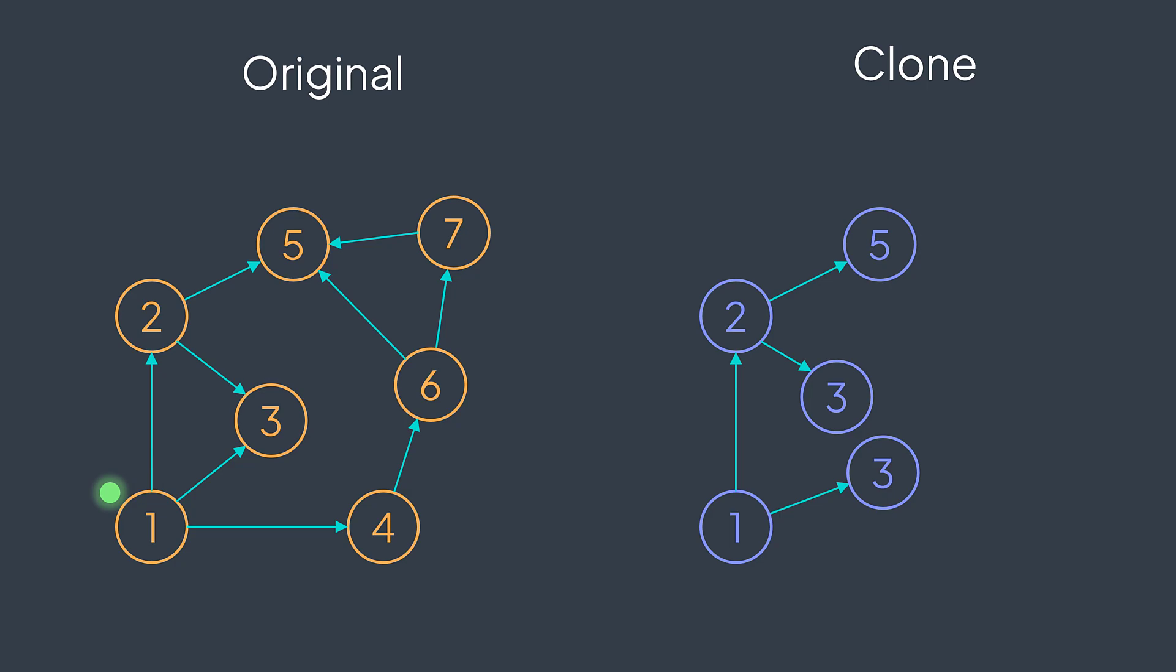First of all, why didn't we get this problem with the tree? Cloning a tree doesn't have this problem because in a tree, nodes cannot have common neighbors like one and two. So each node will be cloned only once.